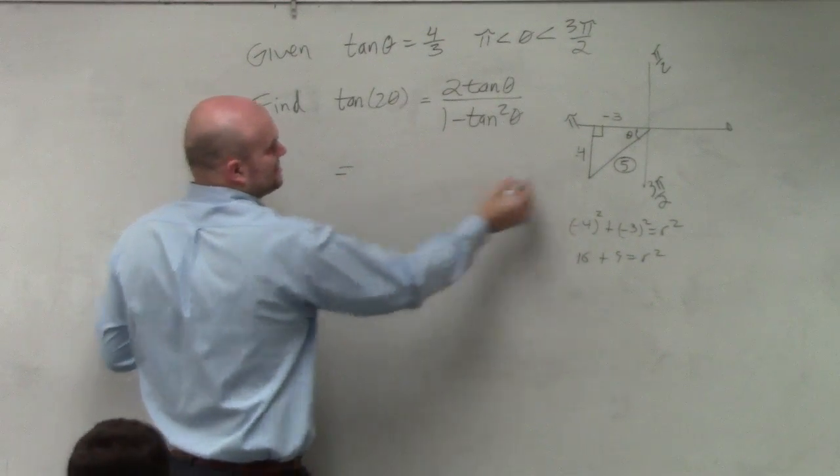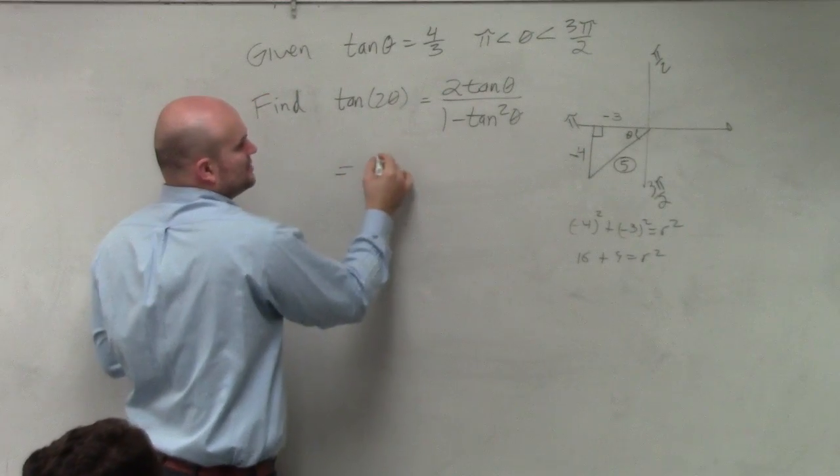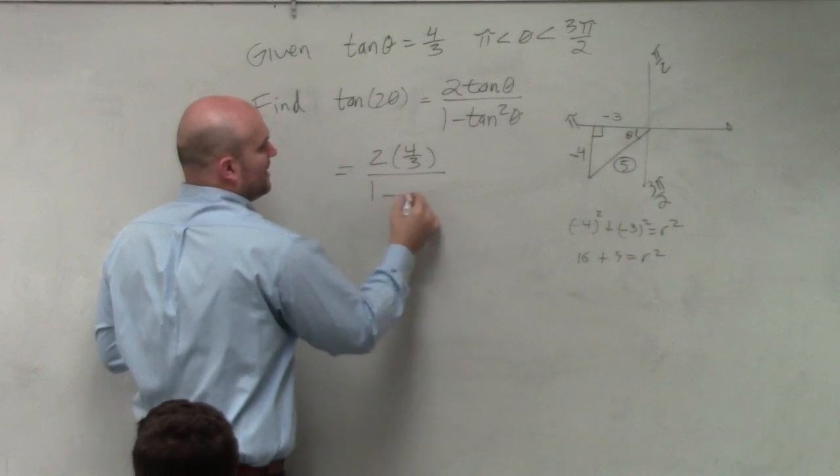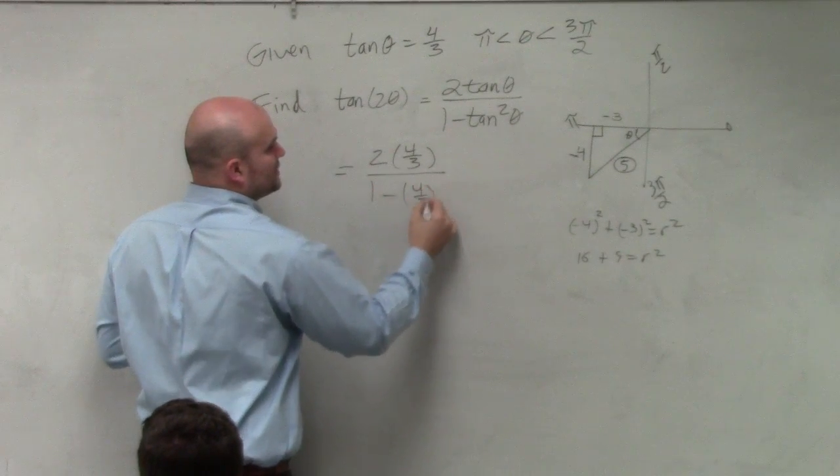So tangent—oops, sorry, that's negative 4/3. Remember, it's 4/3. So we have 2 times 4/3 all over 1 minus 4/3 squared.